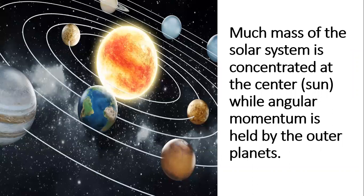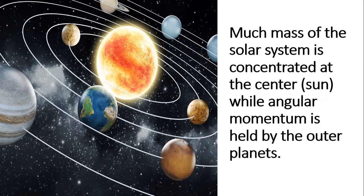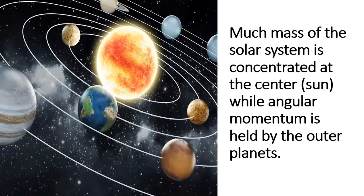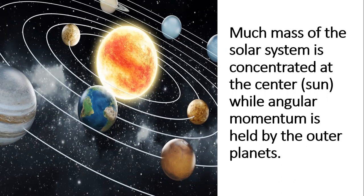Much mass of the solar system, or 98.8% of the total mass, is concentrated at the center or at the Sun, while angular momentum is held by the outer planets.